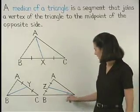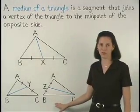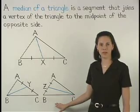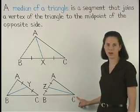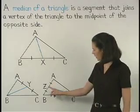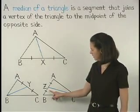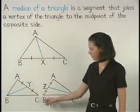And segment CZ is a median of the triangle because one of its endpoints, C, is a vertex of the triangle, and its other endpoint, Z, is the midpoint of the opposite side.